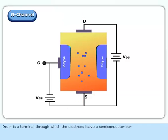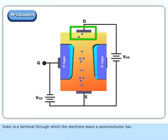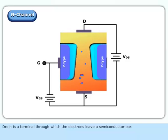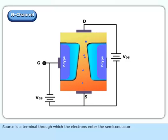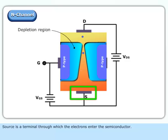Drain is a terminal through which the electrons leave a semiconductor bar. Source is a terminal through which the electrons enter the semiconductor.